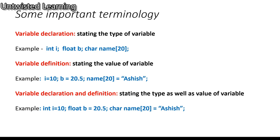Let us also revise some important terminology. Variable declaration means stating the type of variable — int i, float b, char name, etc. Variable definition means stating the value — i equals 10, b equals 20.5, name is Ashish. Variable declaration and definition together in one statement: int i = 10, float b = 20.5, and so on.